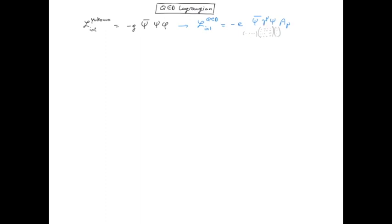Indeed, gamma is a 4x4 matrix and Psi bar is like a line spinner and Psi is a column spinner. So the only possibility to get a number out of it is to insert the matrix in between.